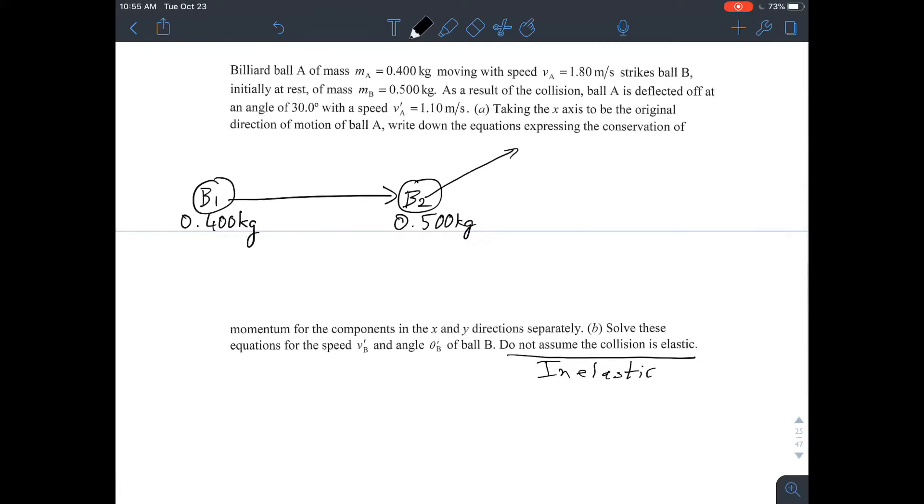So, here we see, here's the ground. And we can just split it into components. We have a 30 degrees component. And at a 30 degrees component, the velocity is given to us. Velocity of ball A is 1.10 meters per second. And it's after the collision, which is why I imagine they added a little tick on it.